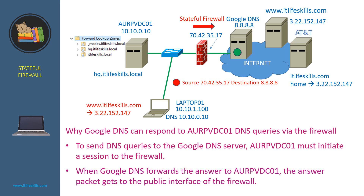Because the firewall is stateful, it can keep track of the session. Now, when Google DNS forwards the answer to OPVDC01, the answer packet reaches the public interface of the firewall. The firewall checks the packet and finds the source is the public IP address of Google DNS and the destination is its own public IP address. So it identifies the packet as belonging to the same session it tracked earlier, and forwards the answer to OPVDC01. Google DNS can only send answers to OPVDC01 when OPVDC01 initiates a session with the firewall first.